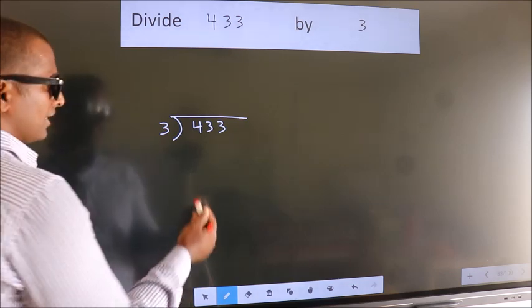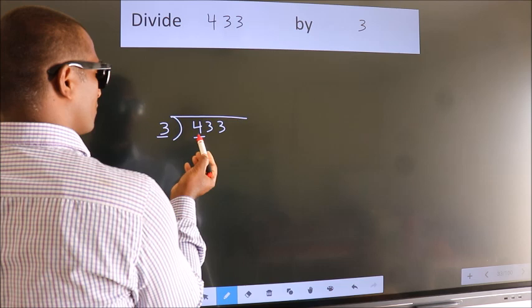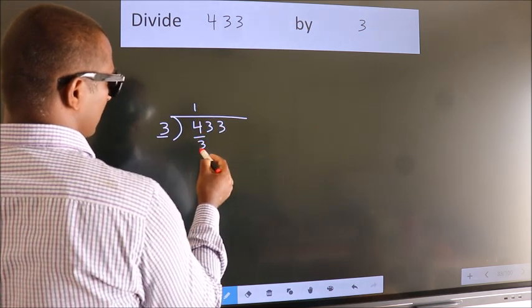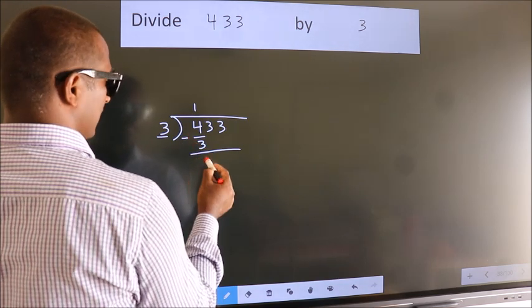Next. Here we have 4, here 3. A number close to 4 in 3 table is 3 once 3. Now, we should subtract. We get 1.